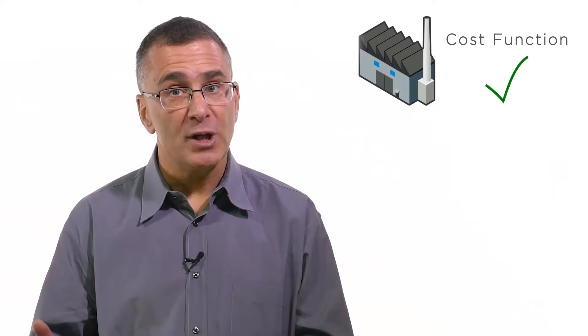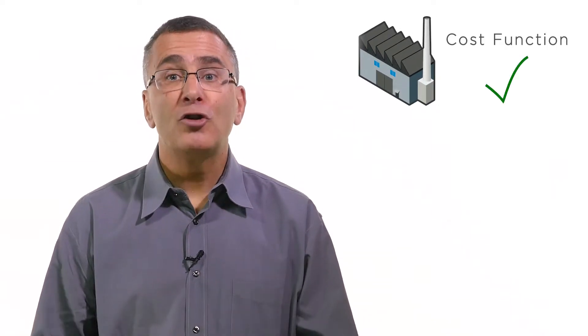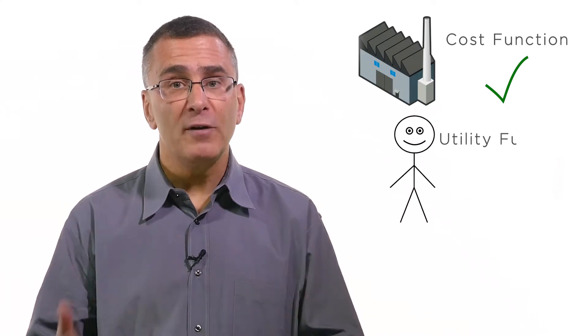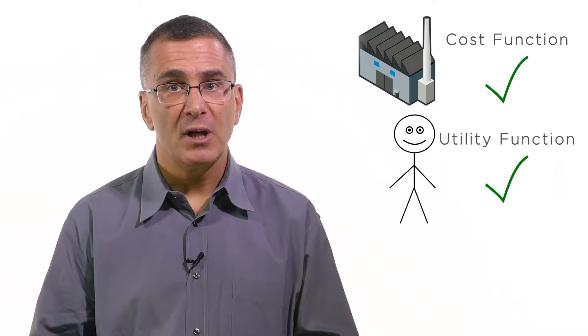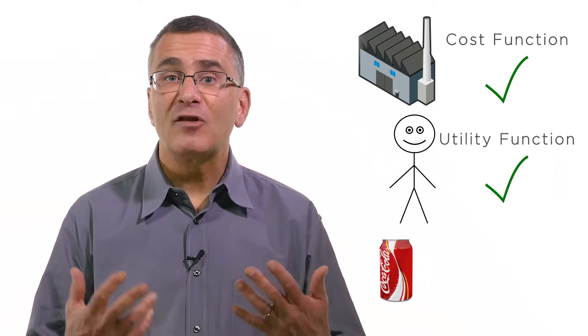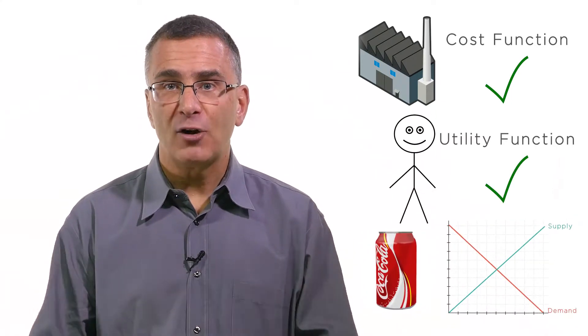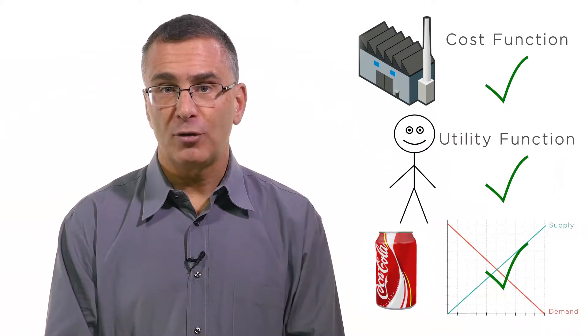Thus far, we've assumed that everything in our models is known perfectly. In part, to simplify the models, we've assumed that a firm knows its cost function with certainty, a consumer knows her utility function with certainty, and a good has supply and demand curves that are certain.